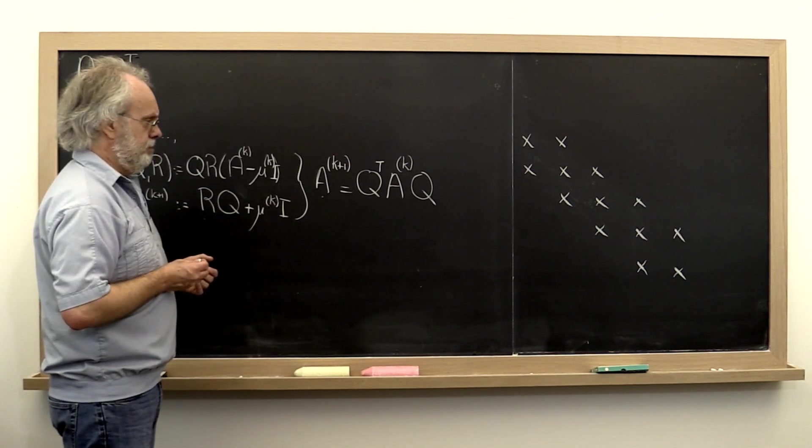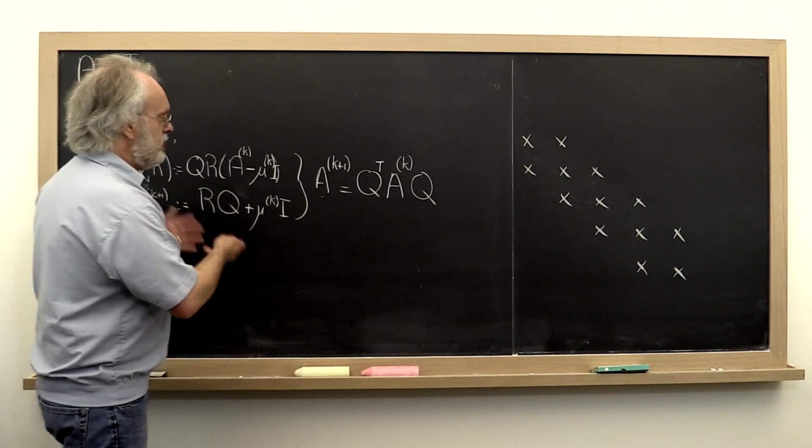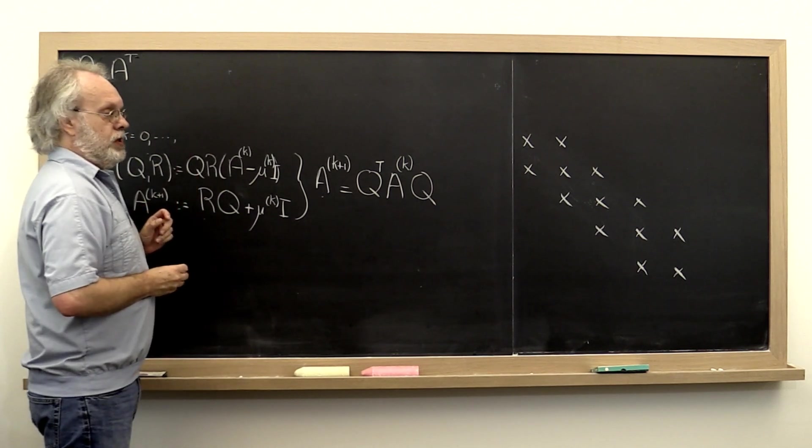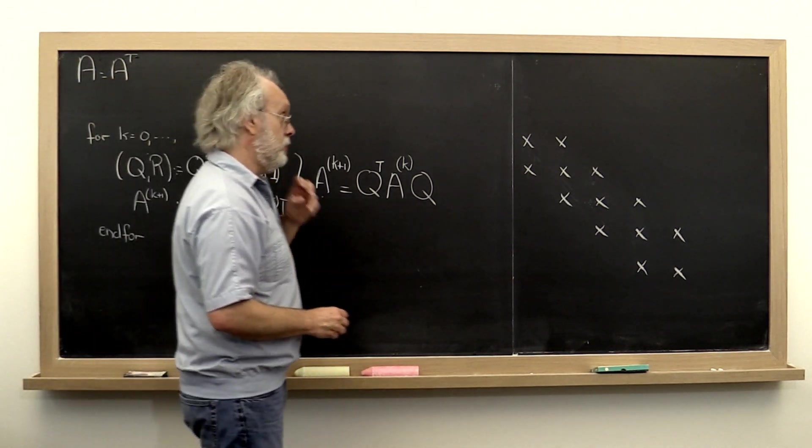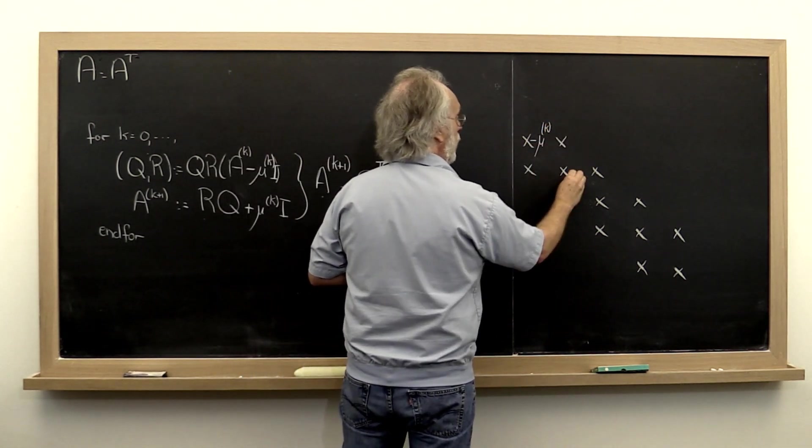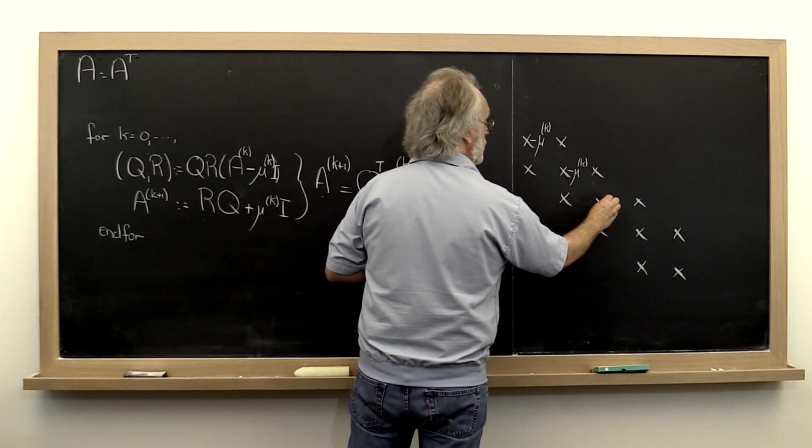Now what does that mean? Well, if we just did the shifted QR algorithm and we used our Givens rotations, then what would we do? We would subtract off our shift off of all of these entries right here.